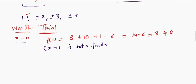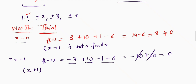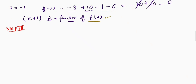Now I'll put x = −1. So f(−1) = −3 + 10 − 1 − 6. The negative terms give −10, and the positive term is +10, so they cancel and we get 0. By the factor theorem, (x + 1) is a factor of the given polynomial. We have found one factor.